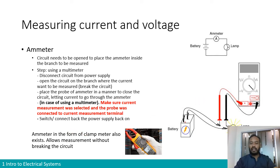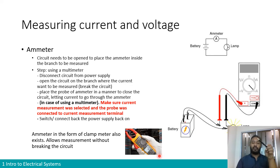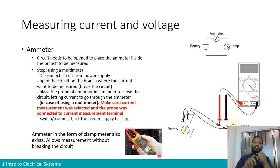Instead of using a two-probe multimeter, you may also use what is called a clamp meter. A clamp meter has a clamp — like a crab clamp — that you can open and place around the conductor you want to measure. It displays the current directly. The advantage is that you don't have to break the circuit; you just clamp the meter onto your conductor. Using the properties of the magnetic field around the conductor, it measures the current. It is an easier tool, though a bit more expensive than a multimeter.